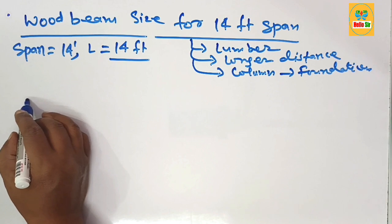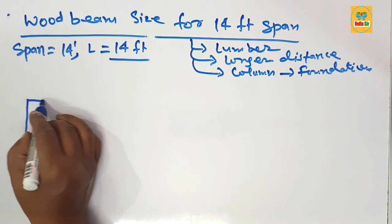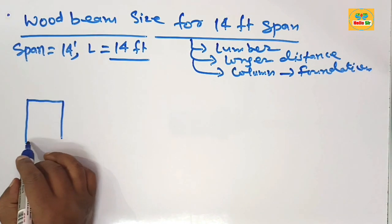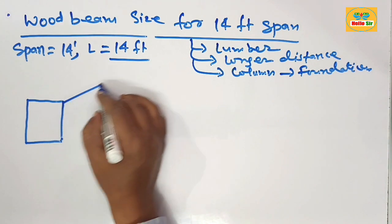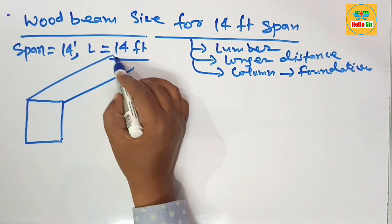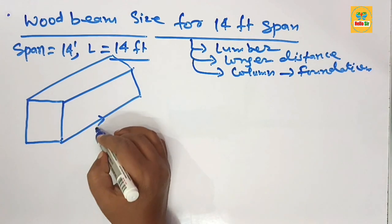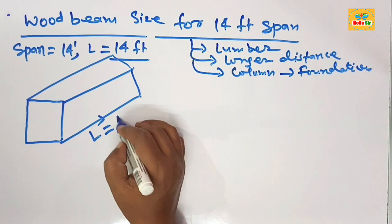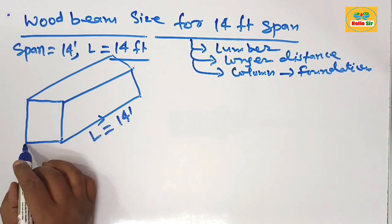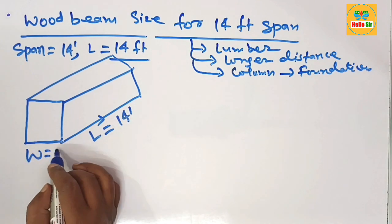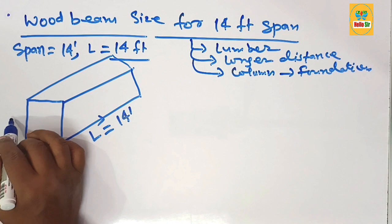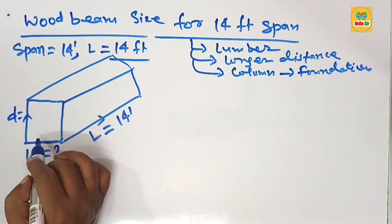rough diagram to understand the width section of the beam, the depth of the beam, and the length of beam required to span 14 feet. This one is the length which is given as 14 feet, this one is the width section of beam which is required, and this one is the depth section of the beam which is required.